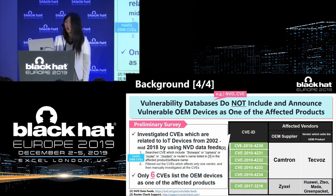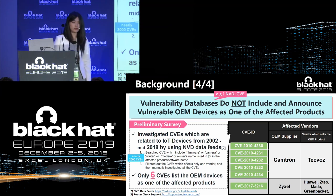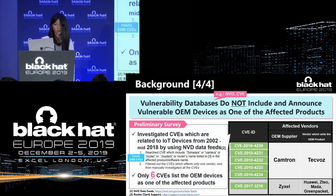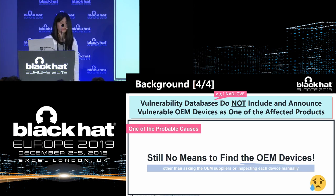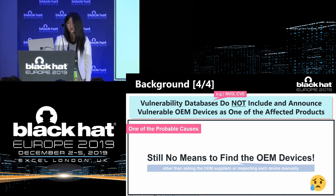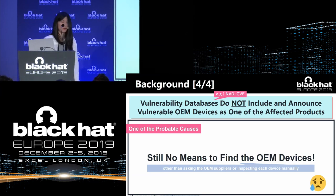To confirm that, I investigated CVEs related to IoT devices from 2002 to mid-2018 using the NVD data feed. As a result, I found that only six CVEs list OEM devices as one of the affected products. One probable cause of this problem is that there is still no means to find OEM devices other than asking OEM suppliers or inspecting each device manually. Thus, to solve this problem, I started considering a way to find OEM devices automatically.